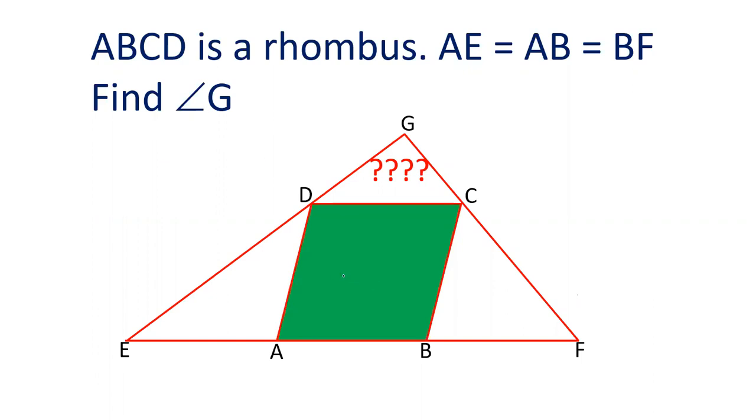In this video we will see there is a rhombus ABCD and one side of the rhombus AB is extended to E and F such that AE equals AB, the side of the rhombus, and BF equals AB and AE. All three lines are equal. We have to find out the value of angle G. Now let's see how we can solve this question.